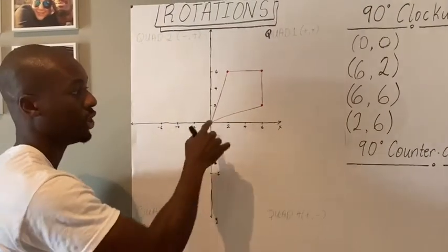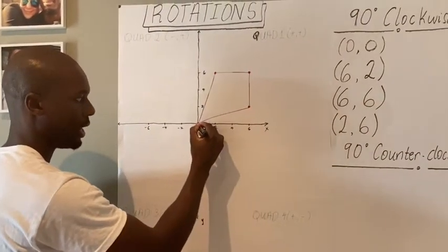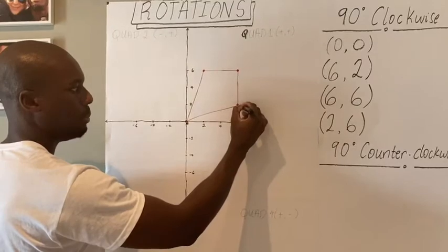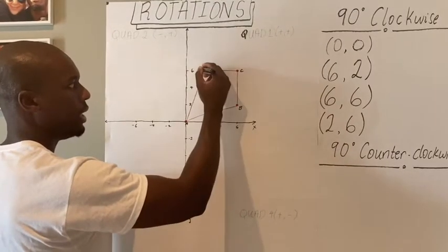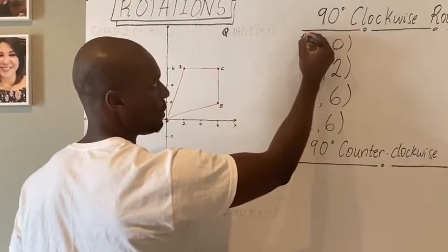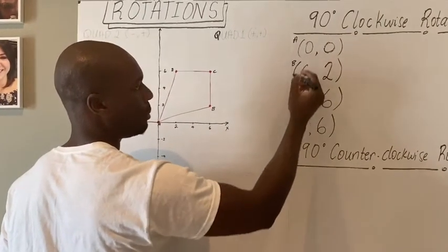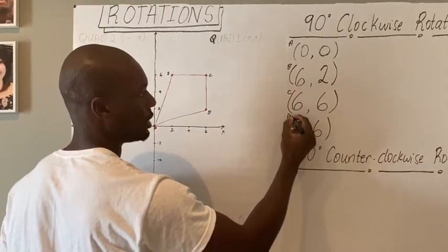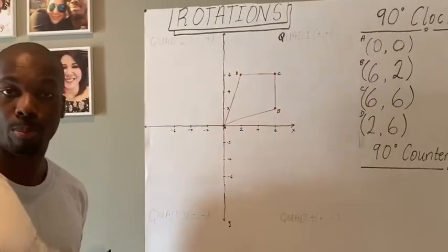And what I'm going to do finally is to just label these. So this is my A, this is my B, it's my C, and my D. So this is point A, point B, point C, and point D.